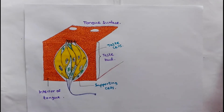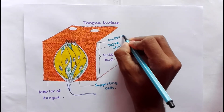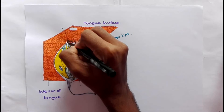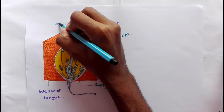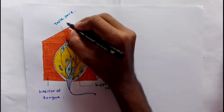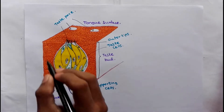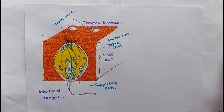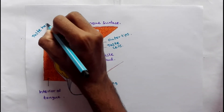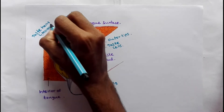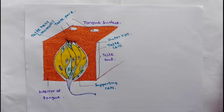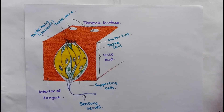Taste cells have outer tips, and those outer tips are arranged around a taste pore. Those taste pores open up into the superior surface of the tongue. The outer tips contain microvilli, and they are also called taste hairs. Around the bodies of the taste cells there is a network of sensory nerves.